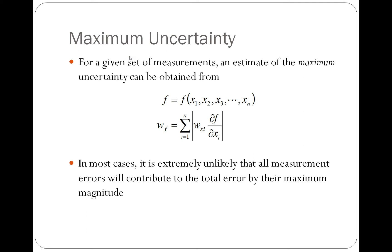Now, it's extremely unlikely that all of the measurement errors will contribute to the total error by their maximum amount. In other words, it's not very likely, it's statistically unlikely, that all of our measurements are going to be off by the greatest amount possible. And that's what maximum uncertainty tells us.